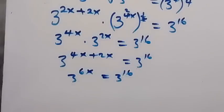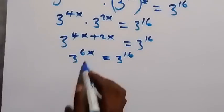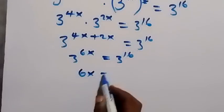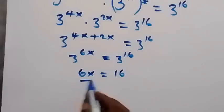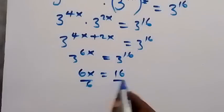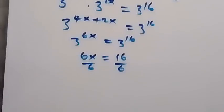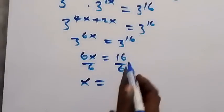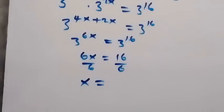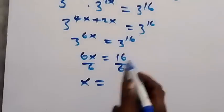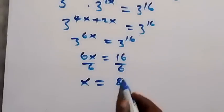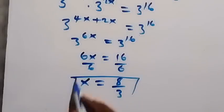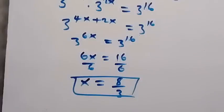Since we have the same base, we equate the powers and have 6x equals 16. Dividing both sides by 6, the 6 cancels, giving x equals 16 over 6. We divide numerator and denominator by 2, giving x equals 8 over 3.